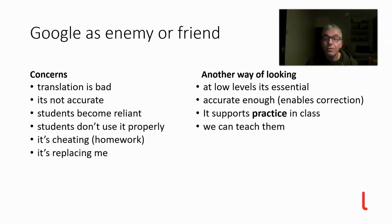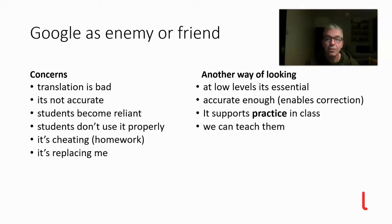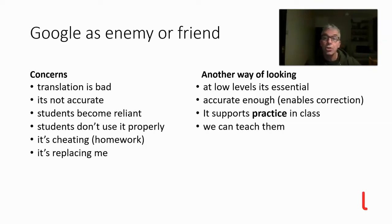Students often don't use Google properly — one fundamental thing they do is take a single word, translate it, then put single words together. What we can show them is they need to work at the level of collocation or small chunks, which is actually how Google works best. The analytics tend to favour these collocational looks at language, and I'll show other things students can do to check their ideas and see if they are what people actually say.